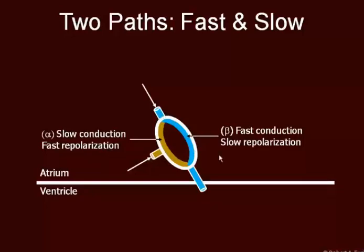When the signal comes in, it comes around the fast pathway down to the ventricles. However, it's also moving down the slow pathway. It collides with the information coming around this way and virtually nothing happens.